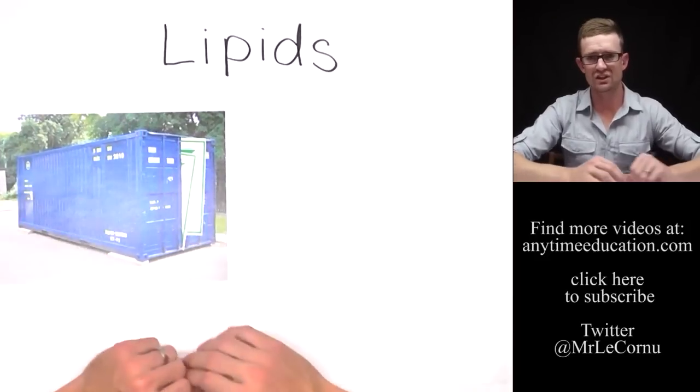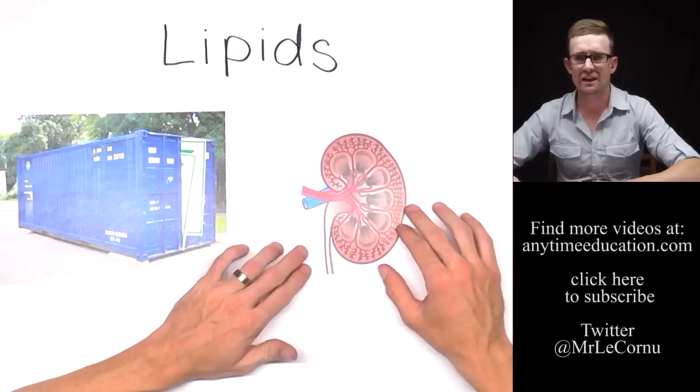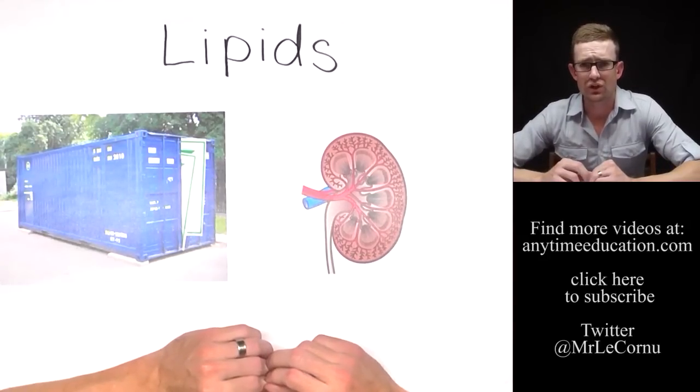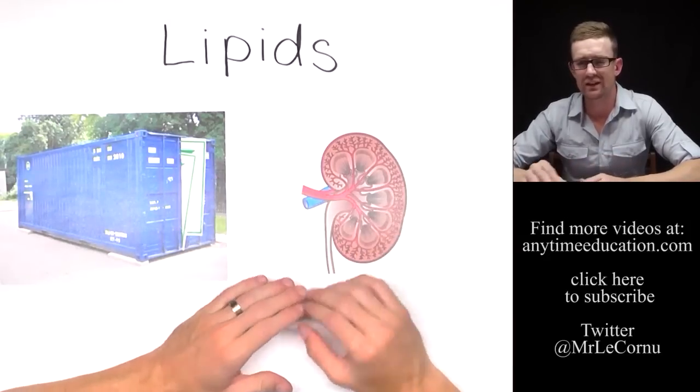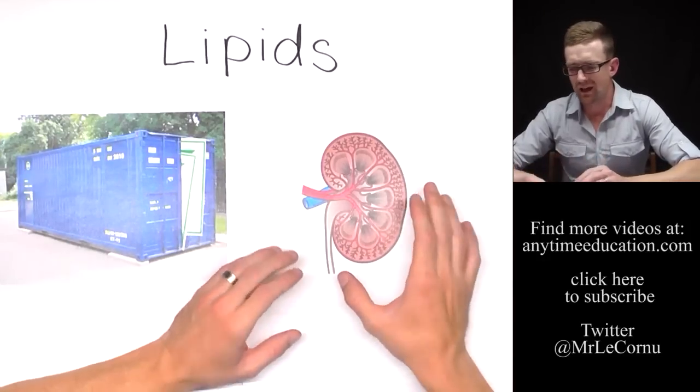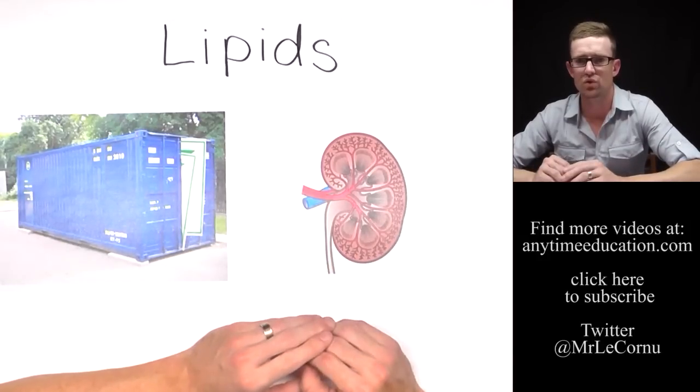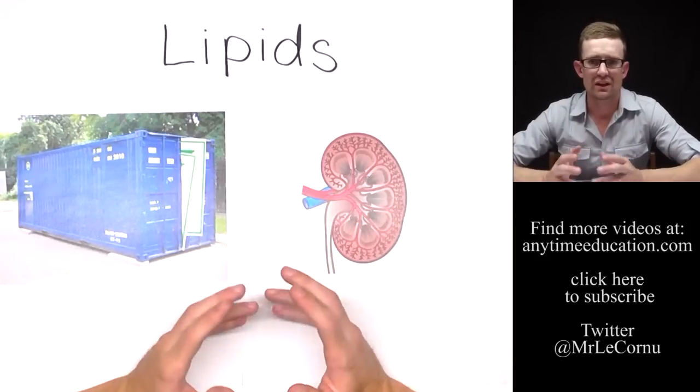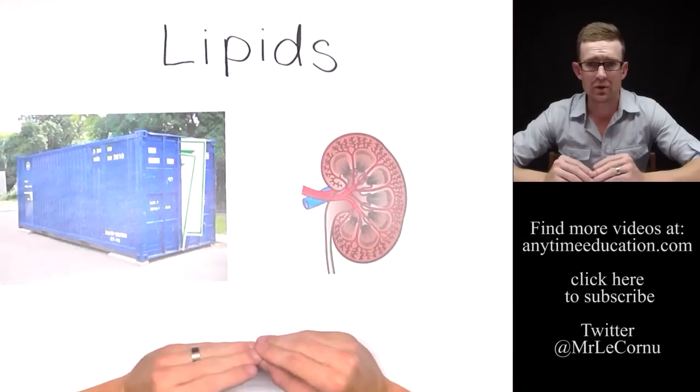But lipids are also involved in insulation and protection in tissue called adipose tissue, which is like a fatty tissue which is found around the outside of some organs like the kidney for example. The adipose tissue provides insulation and protection around the outside of some organs. We also find adipose tissue inside of the skin providing insulation and protection there, and the adipose tissue is made up of lipids.